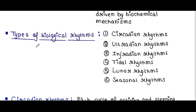Now we will talk about different types of biological rhythms. There are different types: circadian rhythms, ultradian rhythms, infradian rhythms, tidal rhythms, lunar rhythms, and seasonal rhythms.